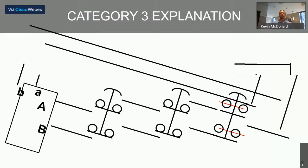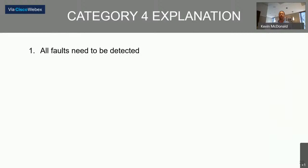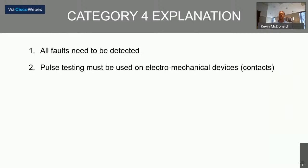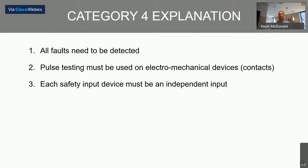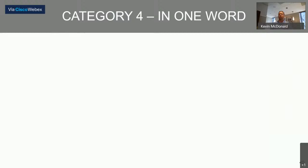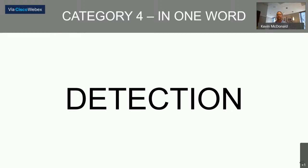To summarize the main differences between Category 3 and Category 4: Category 4 requires (1) all faults must be detected — no single fault or accumulation of faults can defeat the circuit; (2) pulse testing must be used on electromechanical devices — this detects shorts between channels; (3) each safety input device must have an independent input — no daisy chaining. One word for Category 4: detection. Gary Smith and Benjamin LeBay also correctly guessed Category 3 on that last circuit — great job to all.